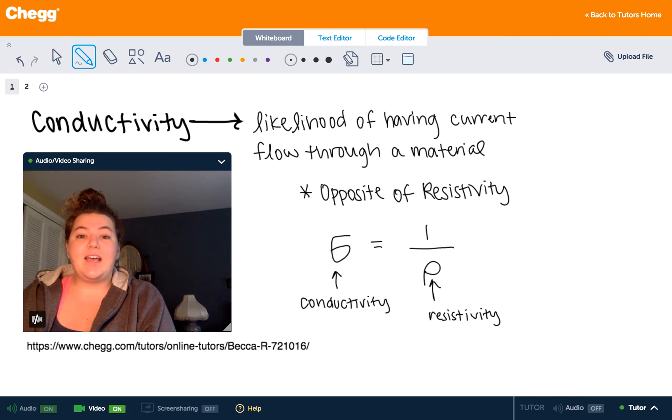So conceptually and mathematically, it is the opposite of resistivity, which is the ability of a material to resist current flowing through it. So conductivity is the opposite of that. It's the ability of a material to allow current to flow through it.